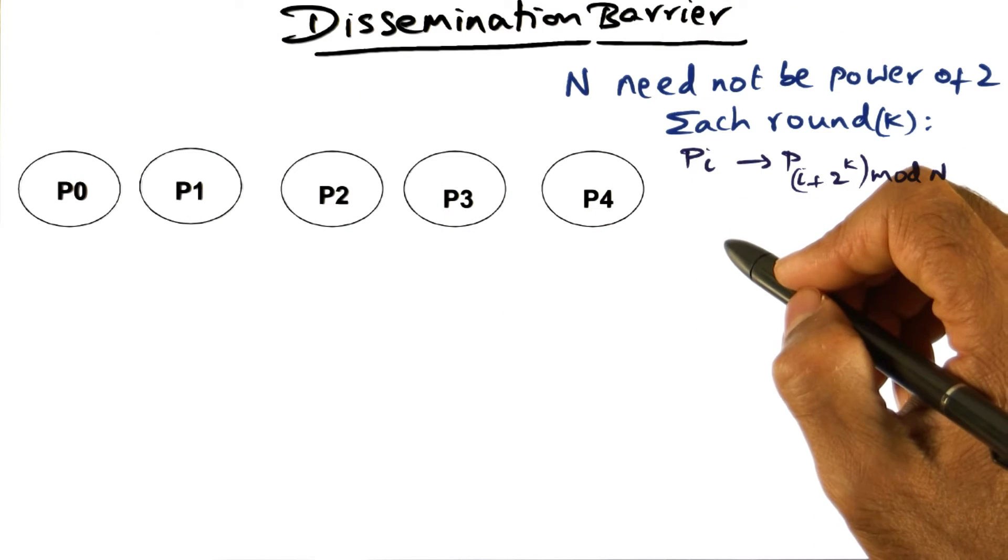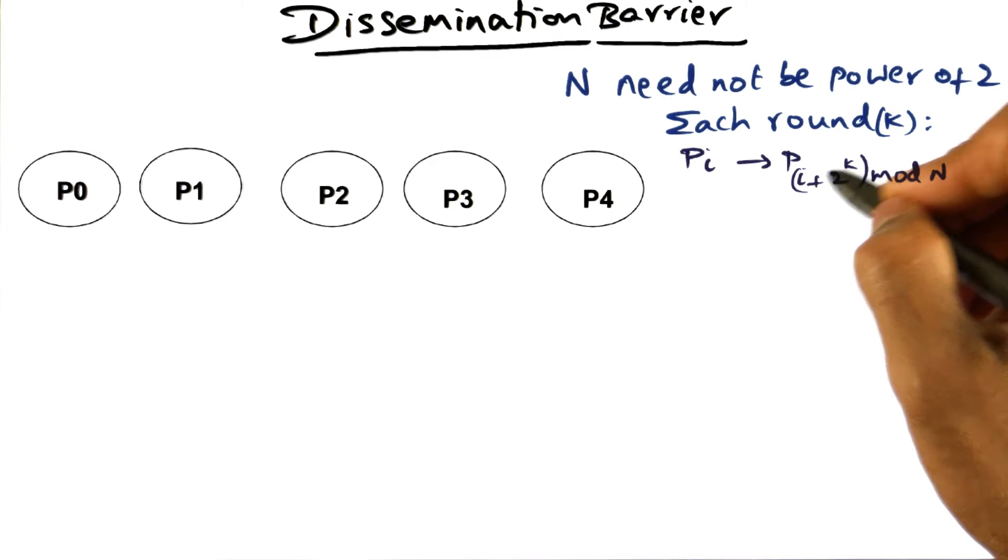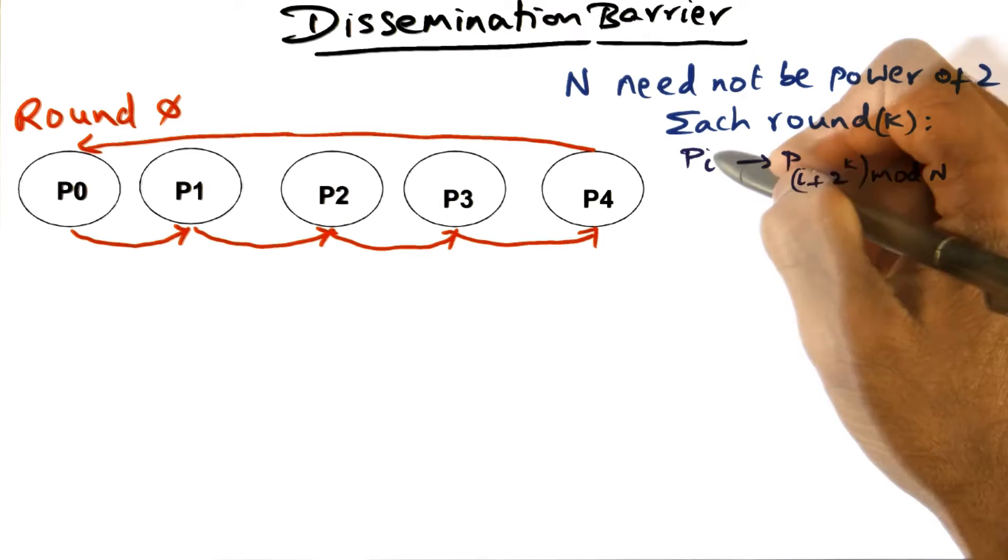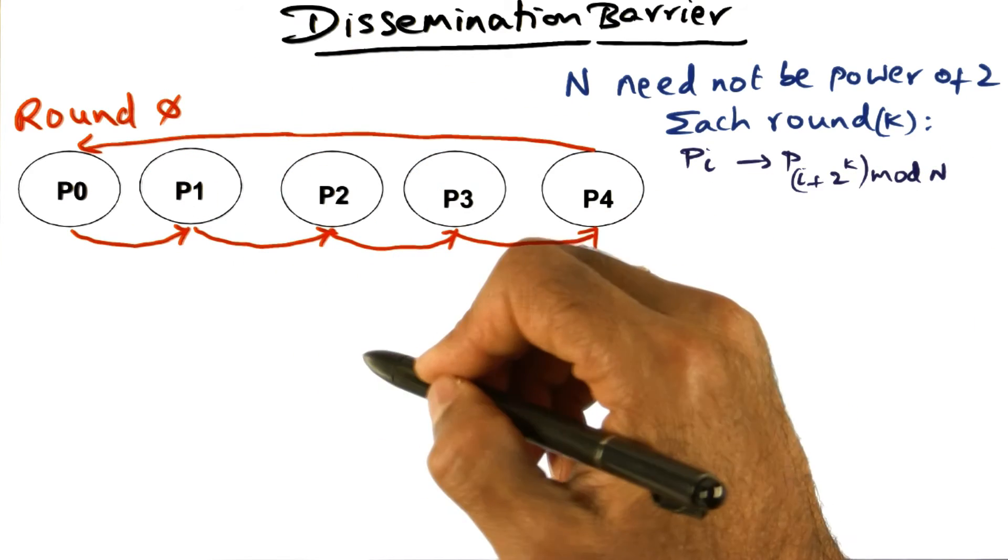Since we have five processes here, we can figure out what's going to happen in every round. In round zero, k is going to be zero. So p0 is going to be sending a message to pi plus 2^k, k being zero, it's going to send it to p1. So p0 sends a message to p1.